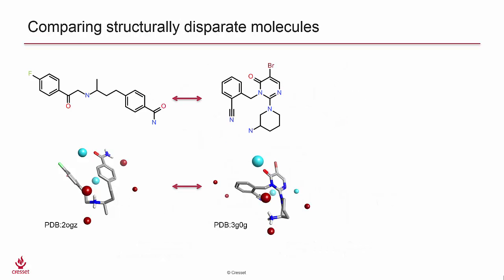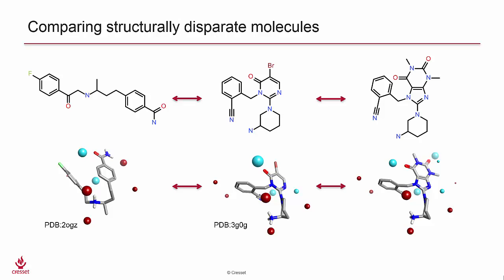As you can imagine, a three-dimensional field shape-based alignment can allow the comparison of structurally diverse molecules and reduce library dependence on a common scaffold.